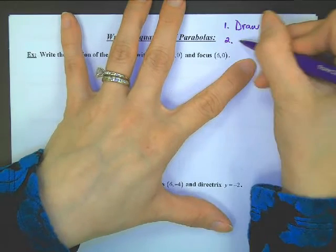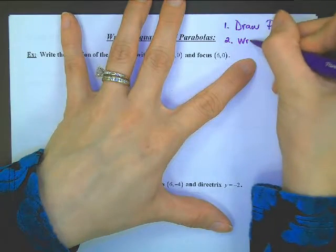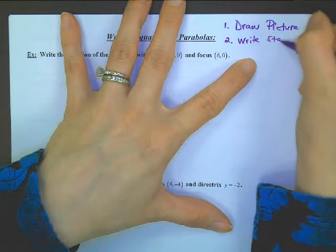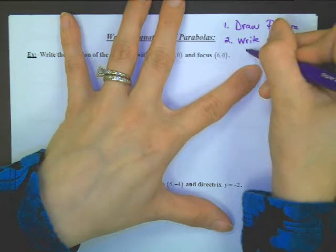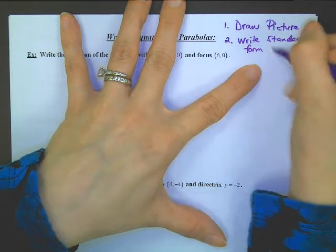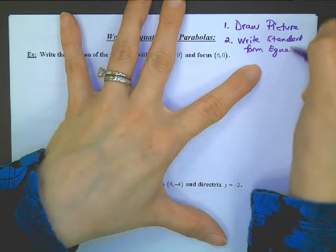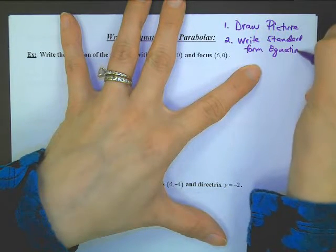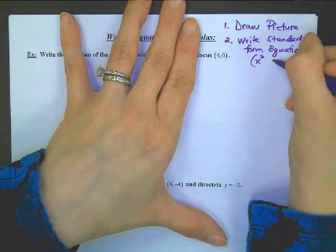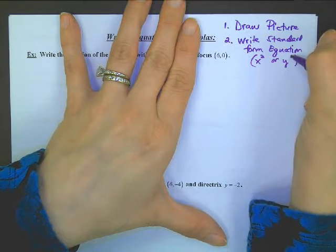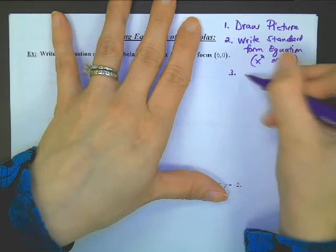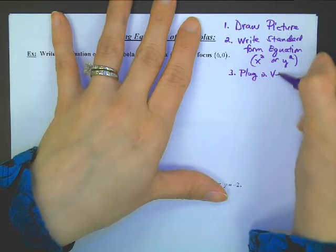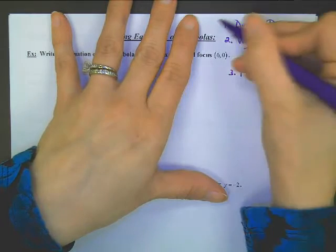The second thing you should do is write the standard form equation. You have to decide if it's x squared or y squared — your picture will help decide that. And then the third thing is you have to plug in the vertex.